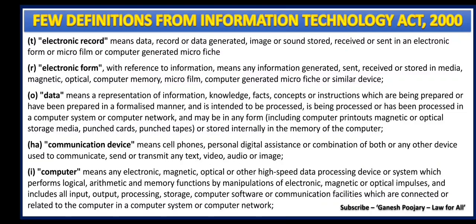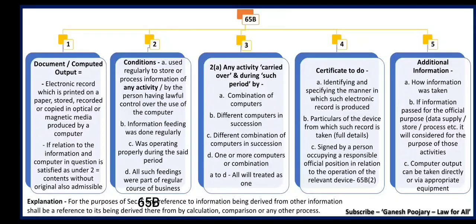These are the few important aspects you should know before we start discussing anything on Section 65A and 65B. Now I am taking you to the chart where we will try to understand Section 65A and B. Section 65A discusses about special provisions as to evidence relating to electronic records. This is an amendment section which says the contents of electronic records may be proved in accordance with the provisions of Section 65B.